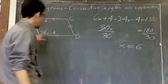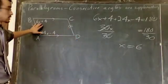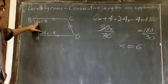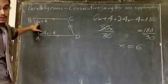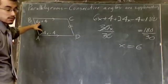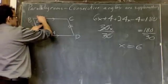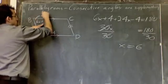So, since x is 6, now that we know that x is 6, we're going to plug it back into this equation. Angle B was 6 times x plus 4. Well, if x is 6, this is really 6 times 6 plus 4. 6 times 6 is 36. 36 plus 4, that means this angle B is 40 degrees.